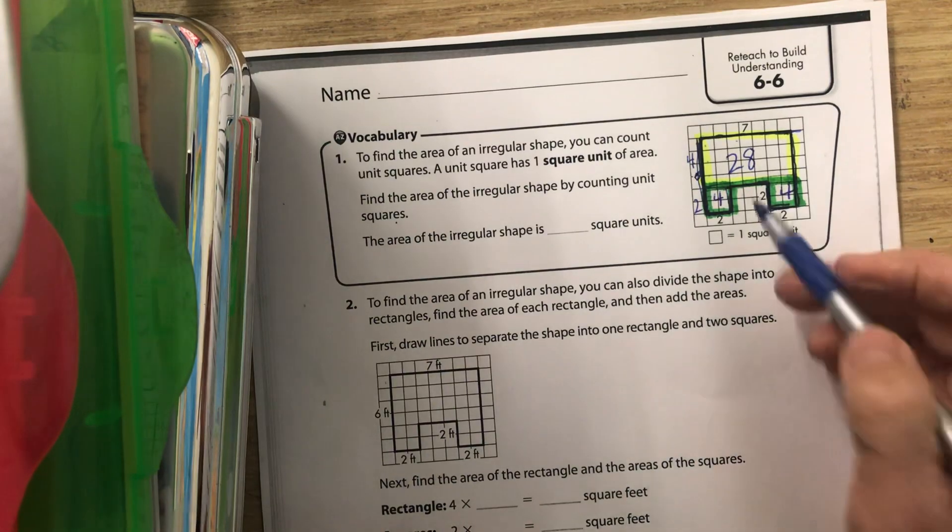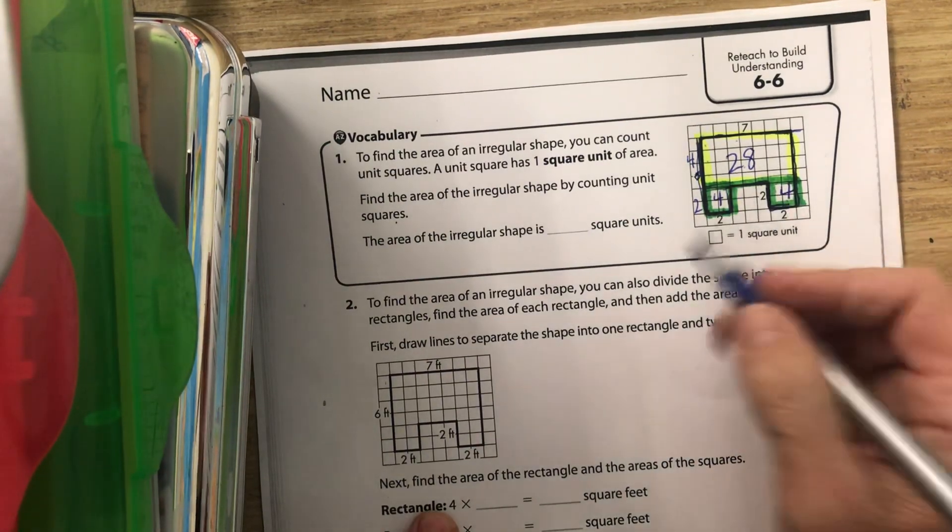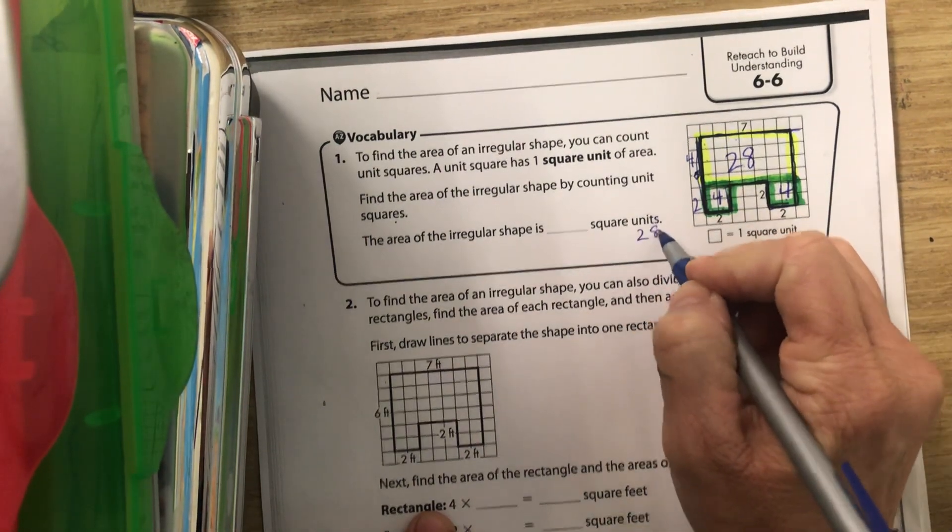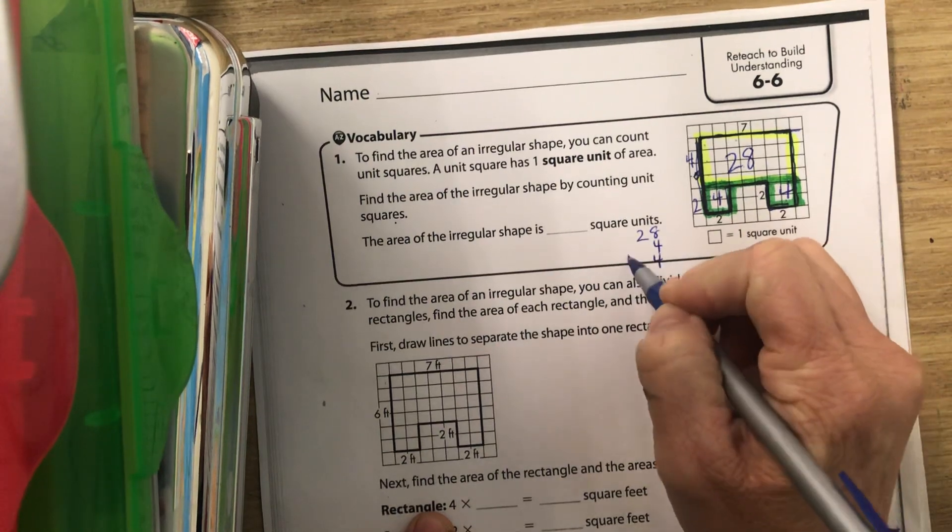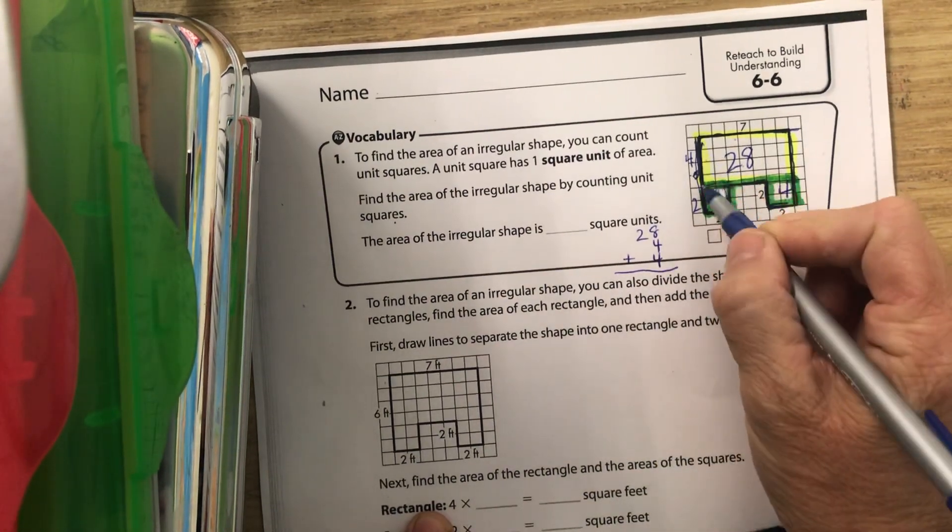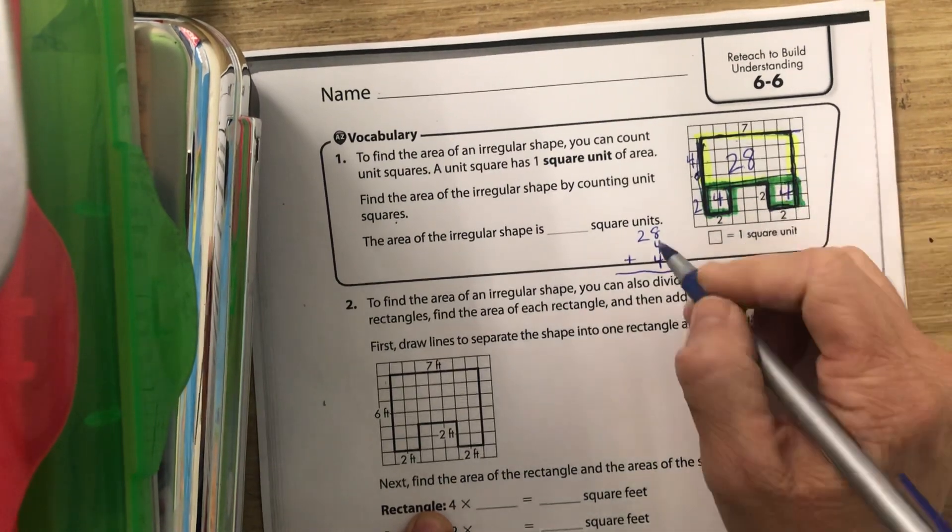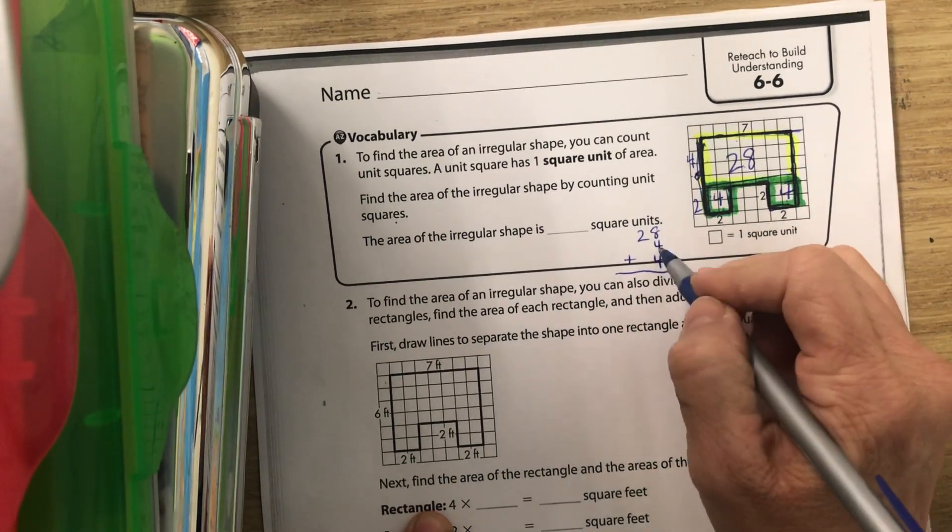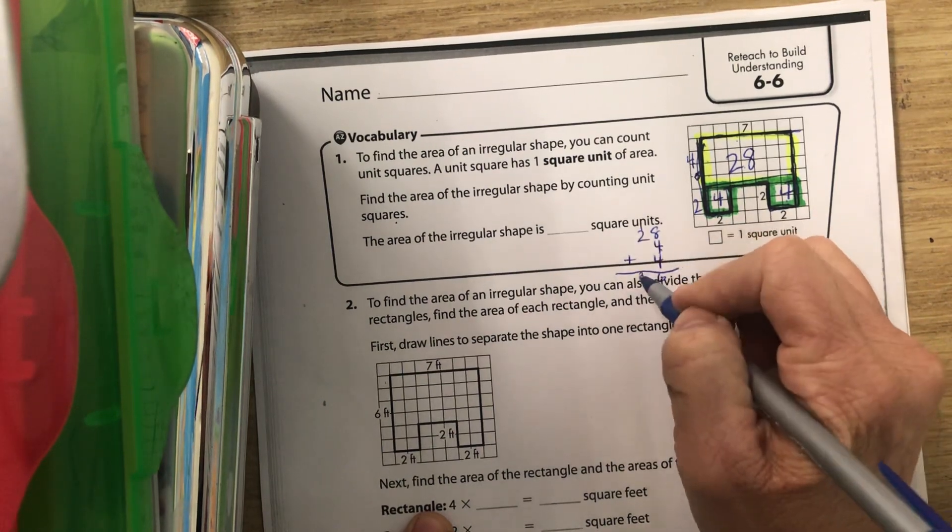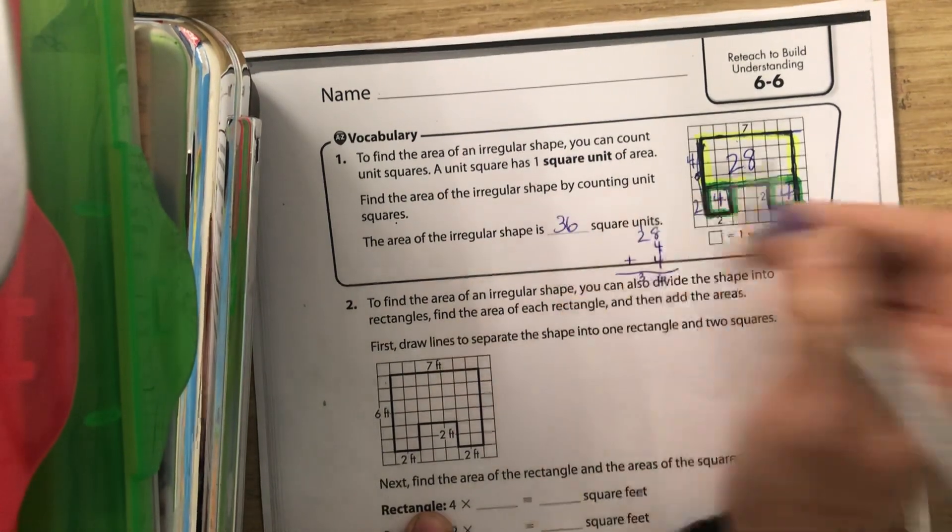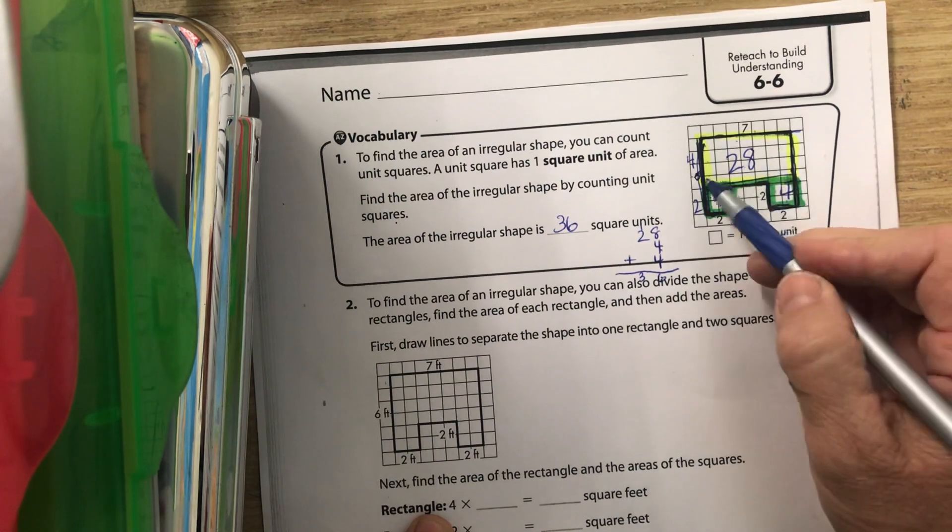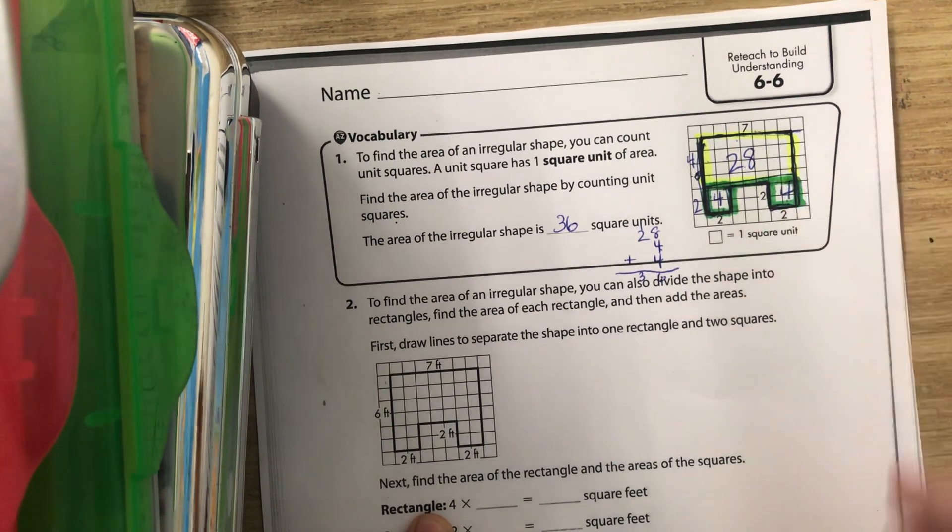And here we have two times two, so there's four, and two times two is four. Then we are going to add them all up: 28 plus four plus four to get our total. This yellow box is 28 plus four plus four. Eight plus eight is 16, carry the one, so it's 36 square units. Because they didn't tell us feet or inches, we just have to use square units.